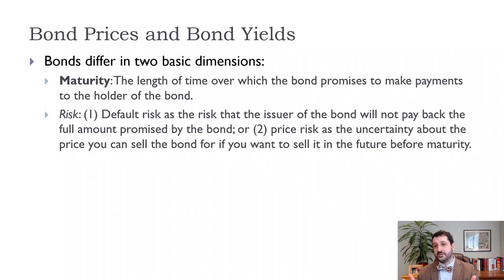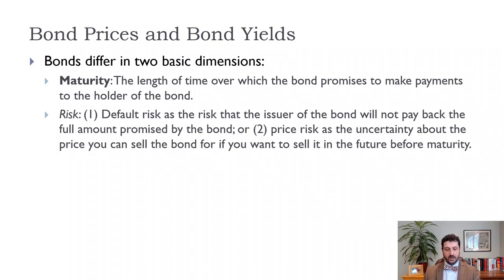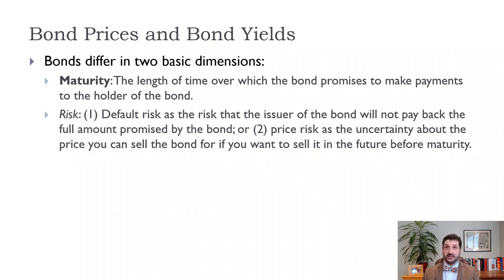Bonds vary in a lot of different ways, but the two main ways are maturity and risk. Maturity is the length of the bond — the length of the loan — and it can be anything from three months to 30 years. That's going to make a difference in terms of how much interest you're going to ask for, and it's related to risk, because there is a higher risk on a longer term loan — both risk of not being paid back (default) and risk from inflation, which could change the yield.